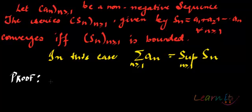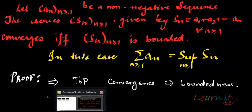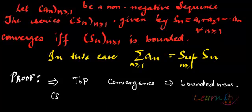Now it's an if-and-only-if statement, so we have two implications. Let's first try to go from series convergence to boundedness. We have already done that — convergence implies boundedness, so SN, the sequence of partial sums, is bounded.